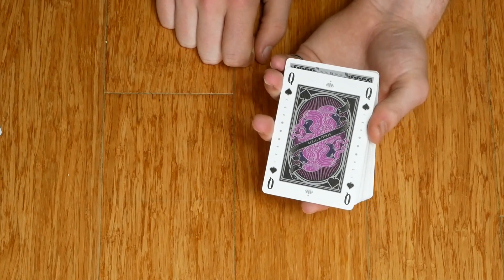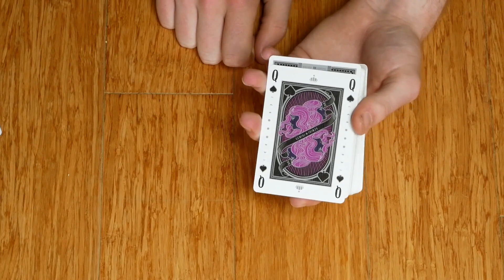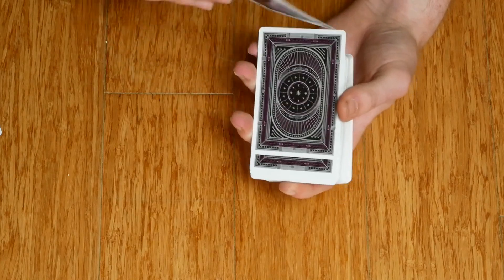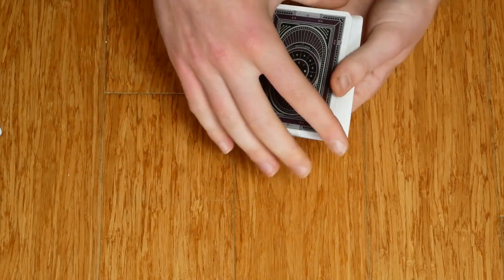And now you can say whatever you're going to say, like your card is magically made its way back to the top. And then you flip it over or have them flip it over. And look at that, it's their card, the Queen of Spades.